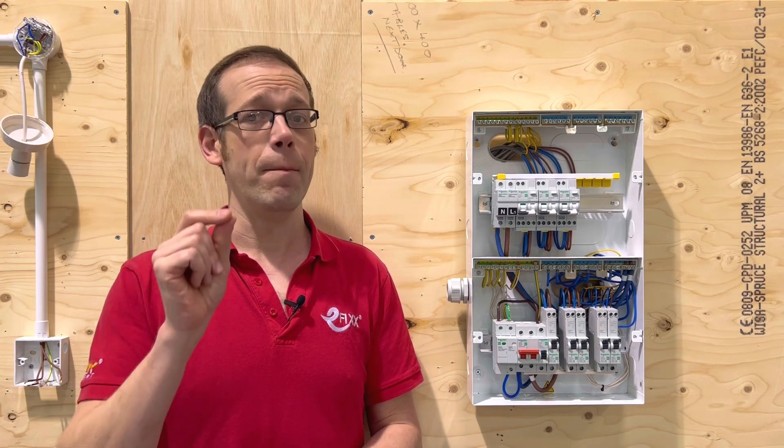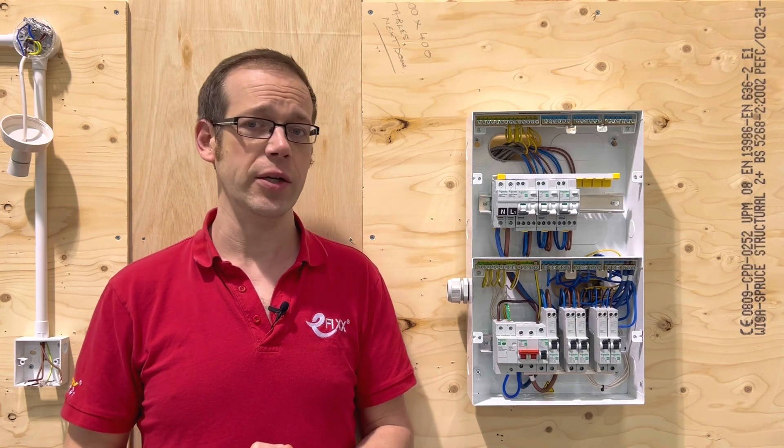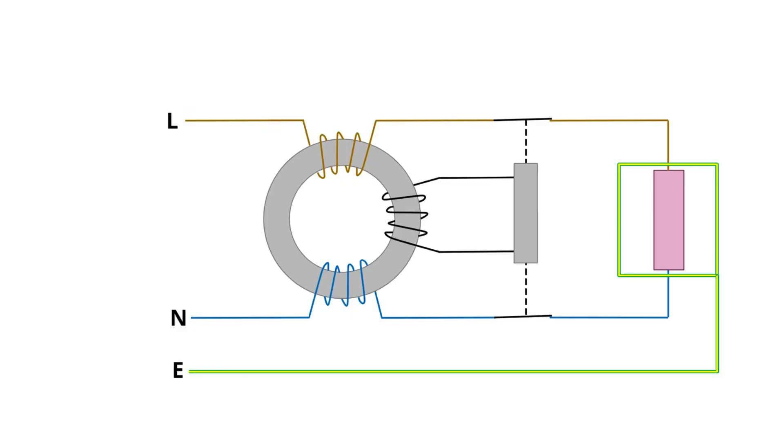But an RCD will offer a measure of protection in this situation. How? Well an RCD works by monitoring the amount of current flowing into the circuit down the line conductor and then back out of the circuit in the neutral conductor. If these two currents are the same the RCD knows that the circuit is healthy. If however it sees a difference between the current in the line and the current in the neutral it knows that somewhere current is flowing to places that it shouldn't either down the circuit protective conductor or through a person to earth and it will disconnect.